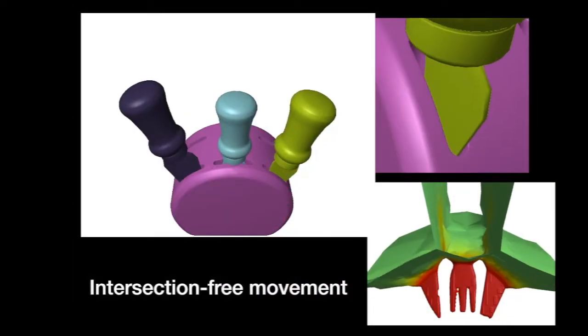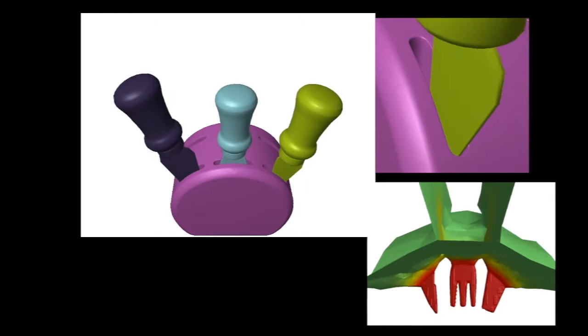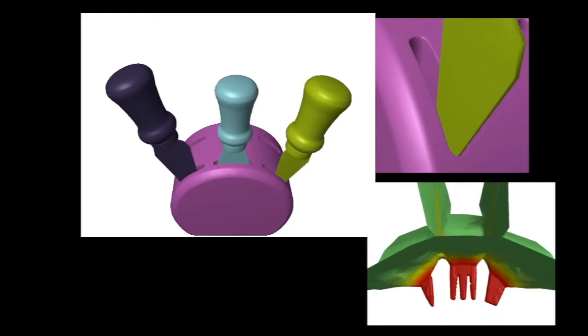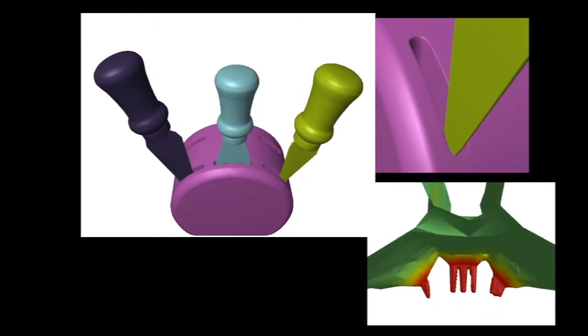By computing motion vectors with the generalized Voronoi diagram, the butter knife's path is guaranteed to not cause intersections with the knife block.